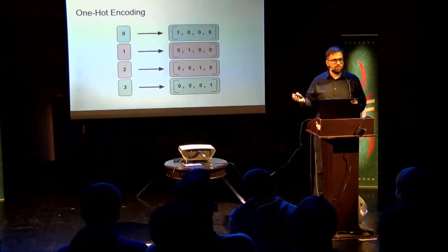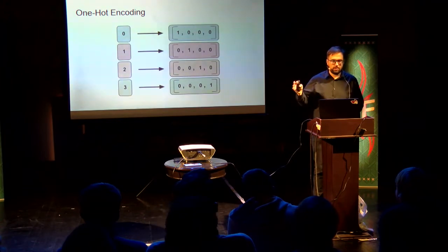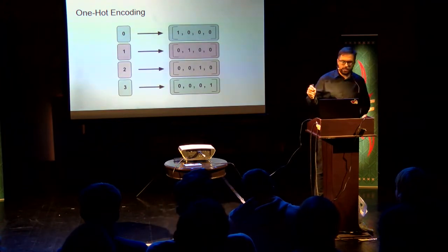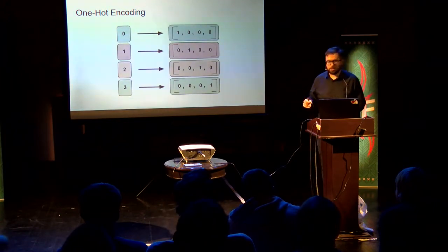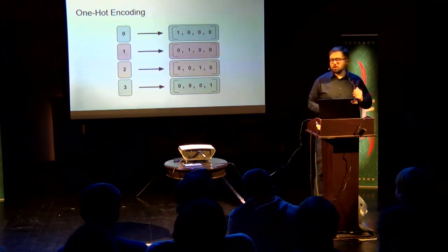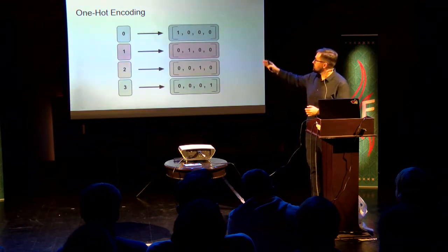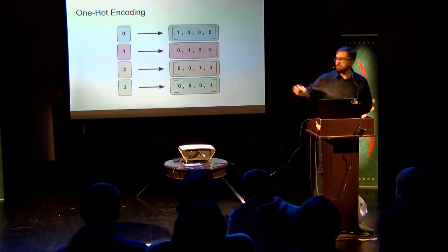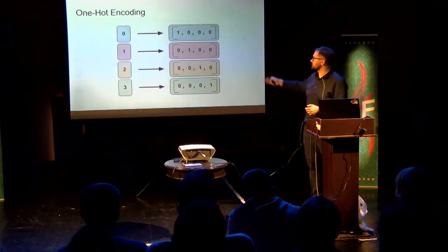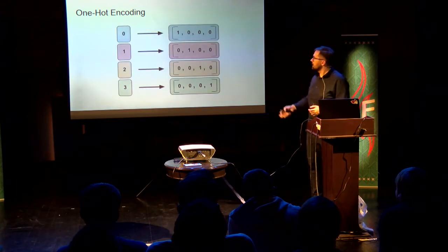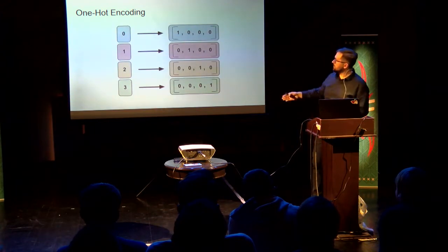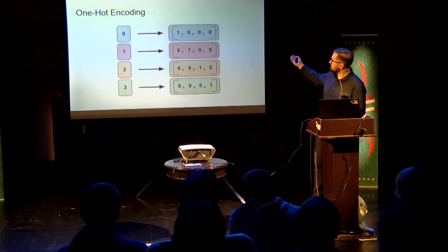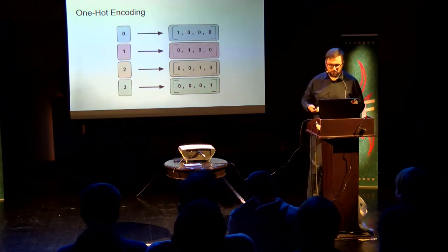One-hot encoding is a representation of categorical features as binary vectors. Here you can see how different values can be presented as vectors.